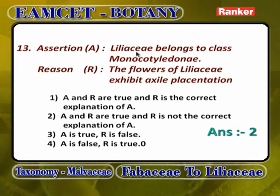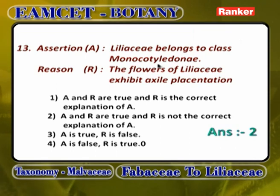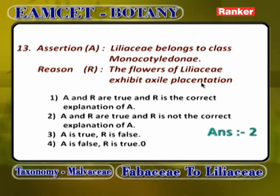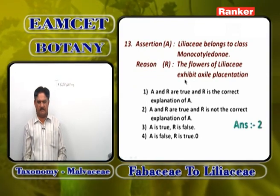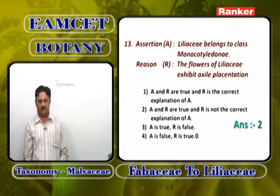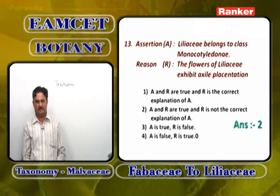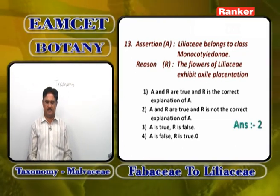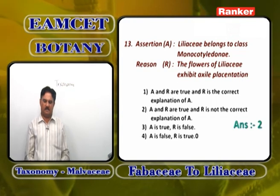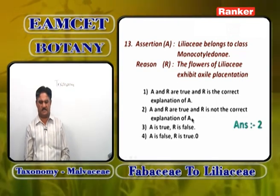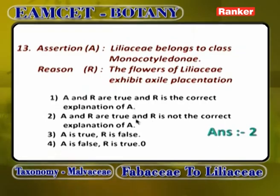Assertion: Liliaceae belongs to class Monocotyledonae — correct. Reason: flowers of Liliaceae exhibit axile placentation — correct. But the reason why Liliaceae belongs to Monocotyledonae is because of fibrous root system, parallel venation, trimerous flowers, etc., not because of axile placentation. So both A and R are correct, but R is not the correct explanation of A.